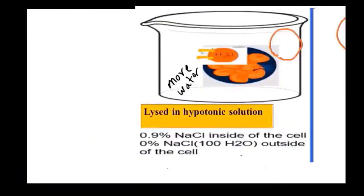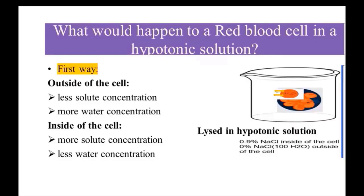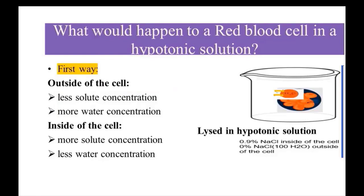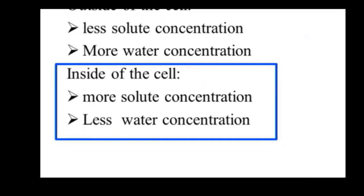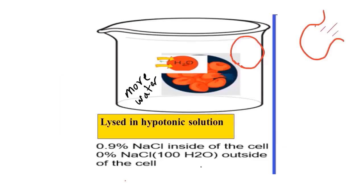I want to explain why water enters the cell in hypotonic solutions. First way: the environment is hypotonic, meaning outside the cell I have less solute and more water, and inside everything is opposite — more solute and less water. So outside I have more water, inside less water, and therefore water enters the cell. Second way using math: outside I have 0% NaCl, so water concentration is 100%. Inside the cell, I have 0.9% NaCl, so water concentration is 99.1%. Outside has more water, so water enters the cell.